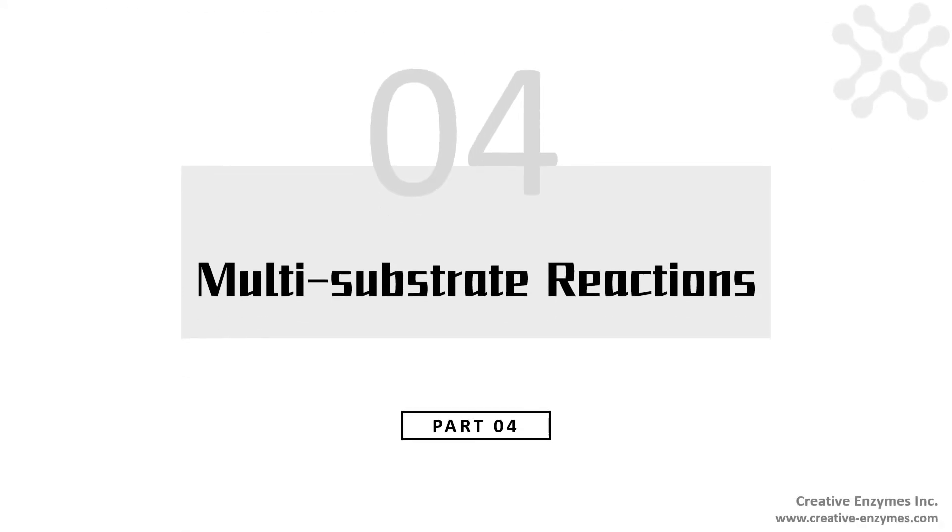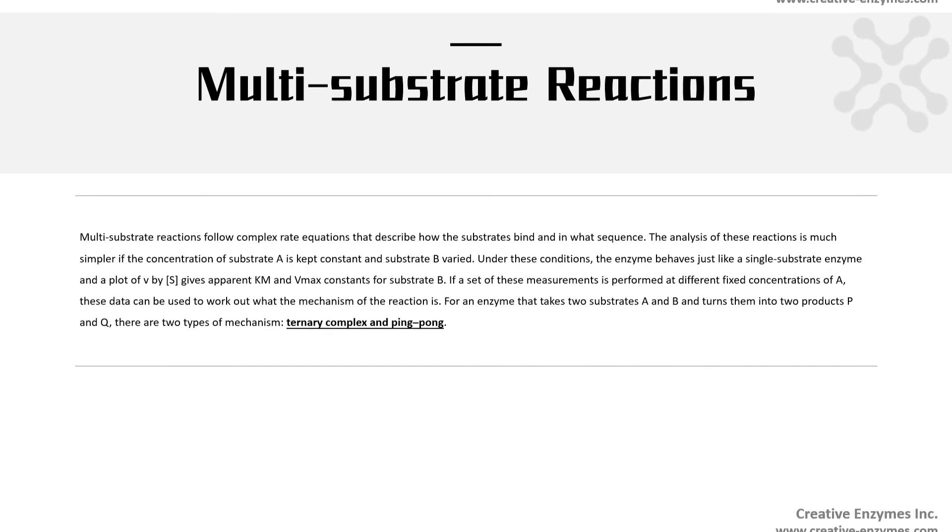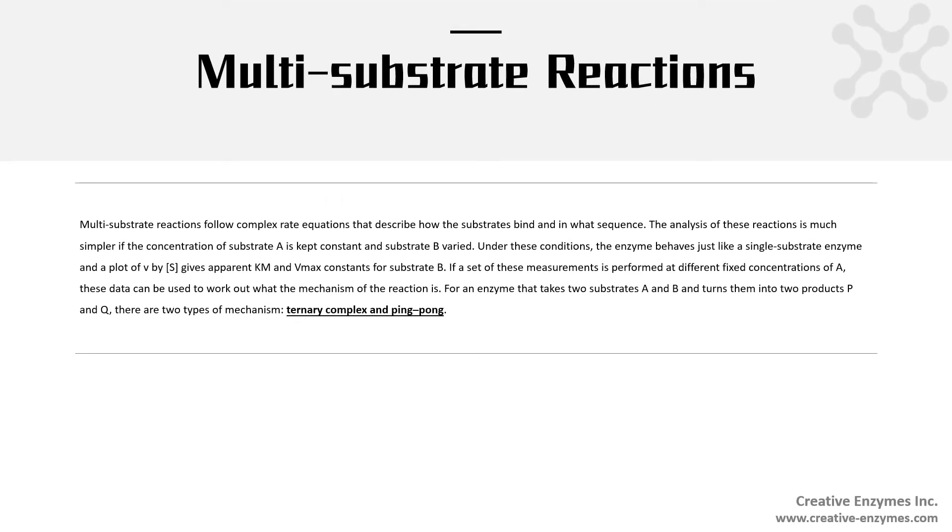Multi-substrate reactions. Multi-substrate reactions follow complex rate equations that describe how the substrates bind in what sequence. The analysis of these reactions is much simpler if the concentration of substrate A is kept constant and substrate B varied. Under these conditions, the enzyme behaves just like a single substrate enzyme, and the plot of V by S gives apparent Km and Vmax constants for substrate B. If a set of these measurements is performed at different fixed concentrations of A, these data can be used to work out what the mechanism of the reaction is.